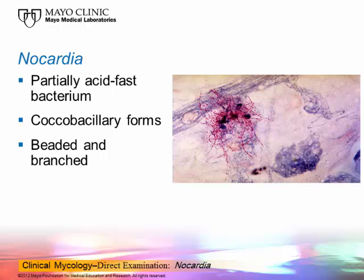We're going to talk about nocardia. Even though nocardia is not a fungus, it is a partially acid-fast bacterium. It's oftentimes seen in the mycobacteriology part of the laboratory or in a fungus lab. It is an organism that is a gram-positive branching bacterium that actually shows coccobacillary forms and the forms of beading. They're branching bacteria, they're aerobic, and they show beaded forms as you see on this slide.